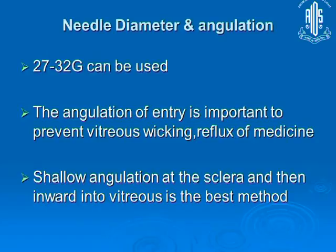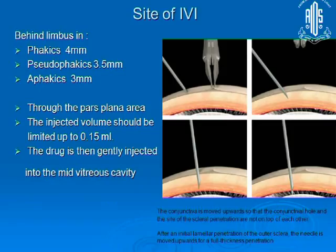The angulation of entry into the vitreous is important to prevent vitreous wicking and reflux of medicine. A shallow angulation at the sclera and then directly into the vitreous is the best method. It is important to measure the site of entry of your needle — 4 mm in phakic patients, 3.5 mm in pseudophakic patients, through the pars plana area.